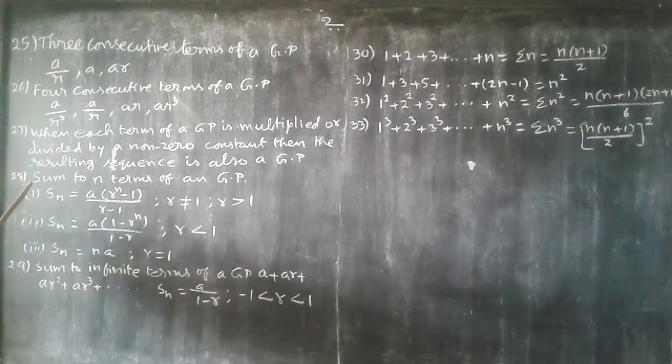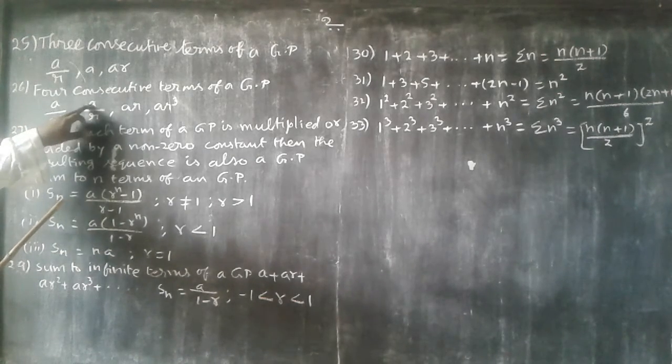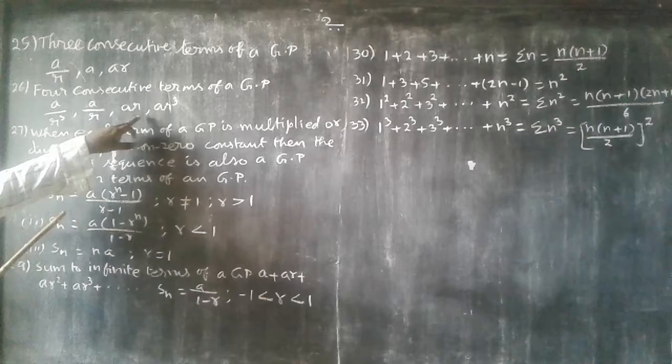26th. Four consecutive terms of a GP: A by R cube, A by R, A, R cube.